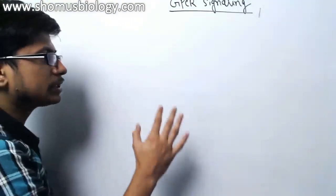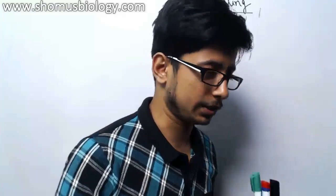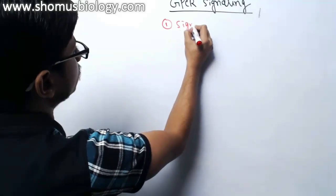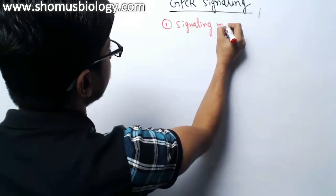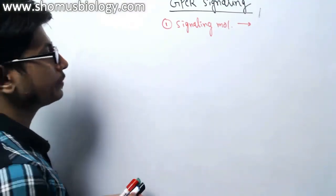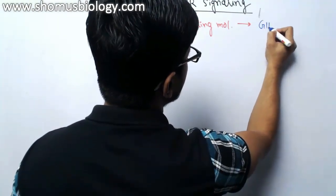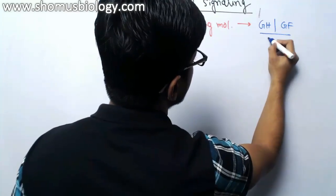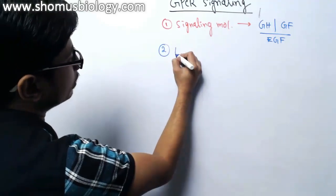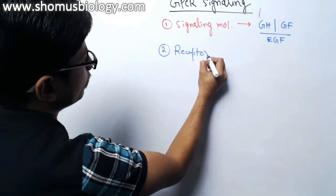Once growth factors interact with the GPCR, the signal is conveyed inside the cell to produce proteins necessary for the cell to grow, divide, and proliferate. When studying any cell signaling process, there are a few key things to know. First is the signaling molecule — the first messenger. In GPCR-coupled signaling, this is typically a growth hormone or growth factor, for example epidermal growth factor (EGF).